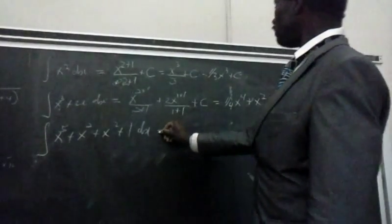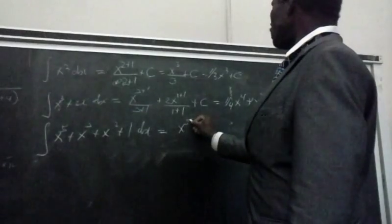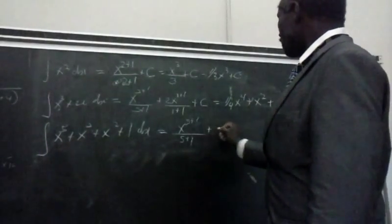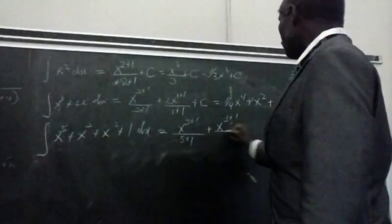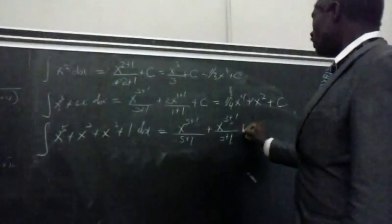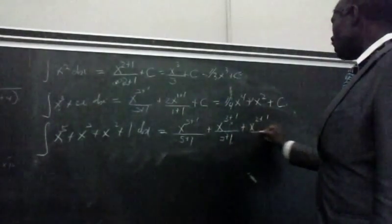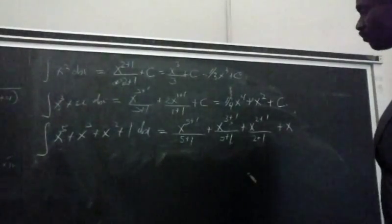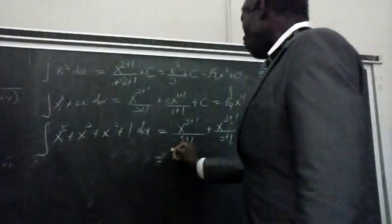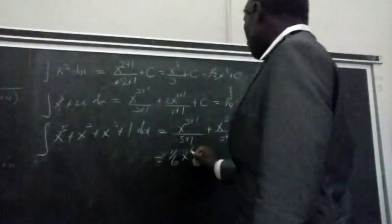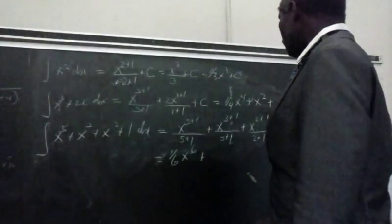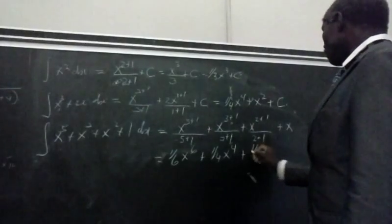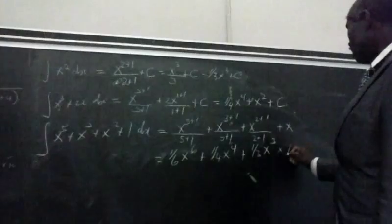Now, this is equal to x to the fifth plus 1 over 5 plus 1, plus x cubed plus 1 over 3 plus 1, plus x squared plus 1 over 2 plus 1, plus the integral of 1. We get x to the sixth over 6, plus x to the fourth over 4, plus x cubed over 3, plus x.